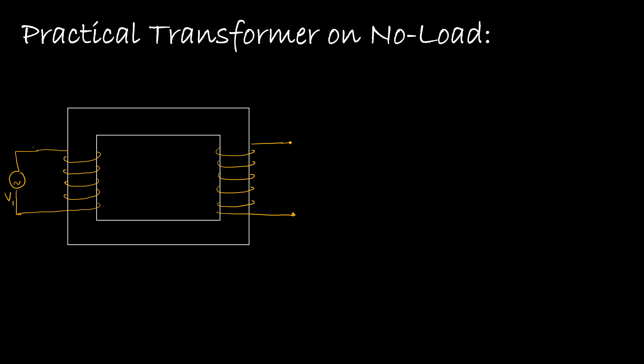When we connect the supply voltage, a small amount of current called no load current will circulate through the primary winding. We call it a small current because the load current on the other side is zero. When this current passes through the primary circuit, one flux will be produced in the core, and according to Faraday's law, an EMF will be induced across the primary winding. That EMF is called the primary induced EMF, E1.